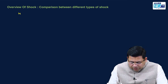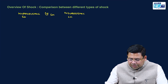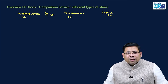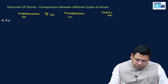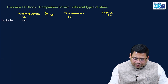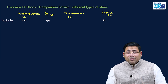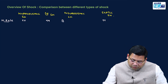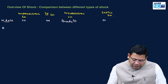We have hypovolemic shock, then cardiogenic shock, then neurogenic shock, and then septic shock. The first basic parameter we are going to see is heart rate. The heart rate is going to increase in cardiogenic, hypovolemic, and also in septic shock — except neurogenic shock.